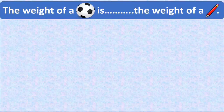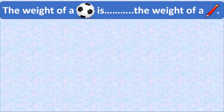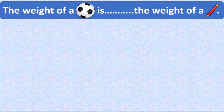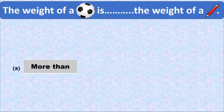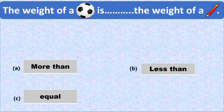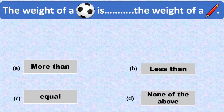Here is the first question. The weight of a football is dash the weight of a pencil. The four options are: option A is more than, option B is less than, option C is equal to, and option D is none of these.